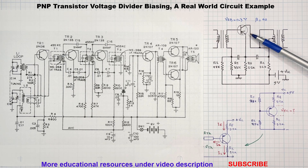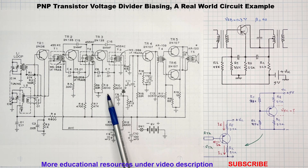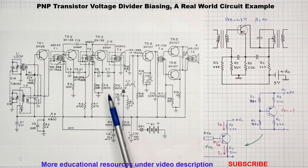In this video we are going to determine the operating point or Q-point of this germanium type PNP transistor. This circuit is a part of the IF stage of an old AM radio receiver as you can see here.